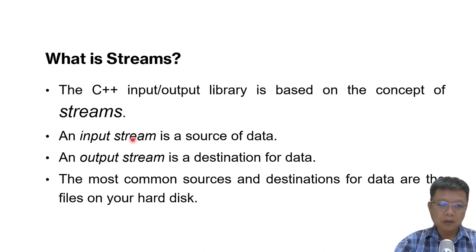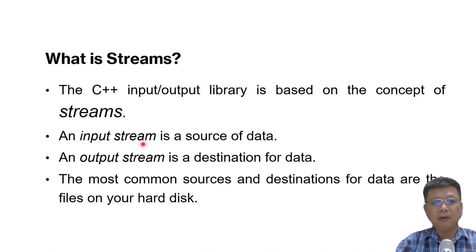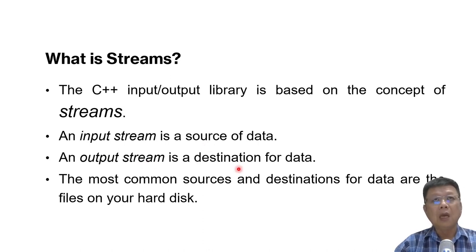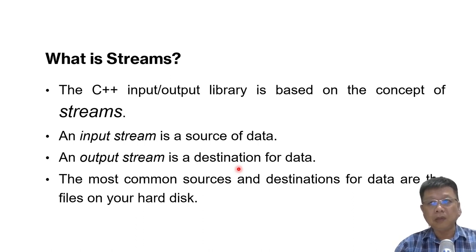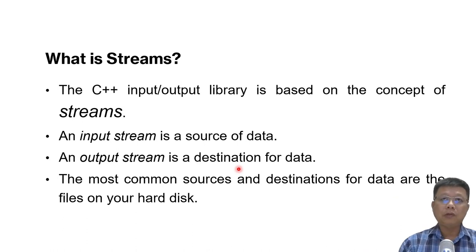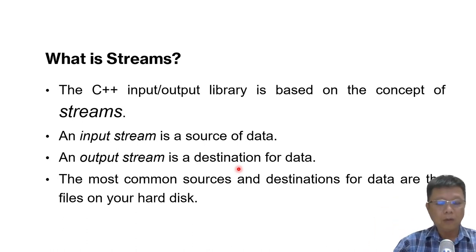File streams are also the same as I/O streams. We have input streams, which is referring to the source of the file, and then output streams, which is referring to destinations. To understand more: input streams means we get the input from a file, and output streams means that we are going to write to the file.